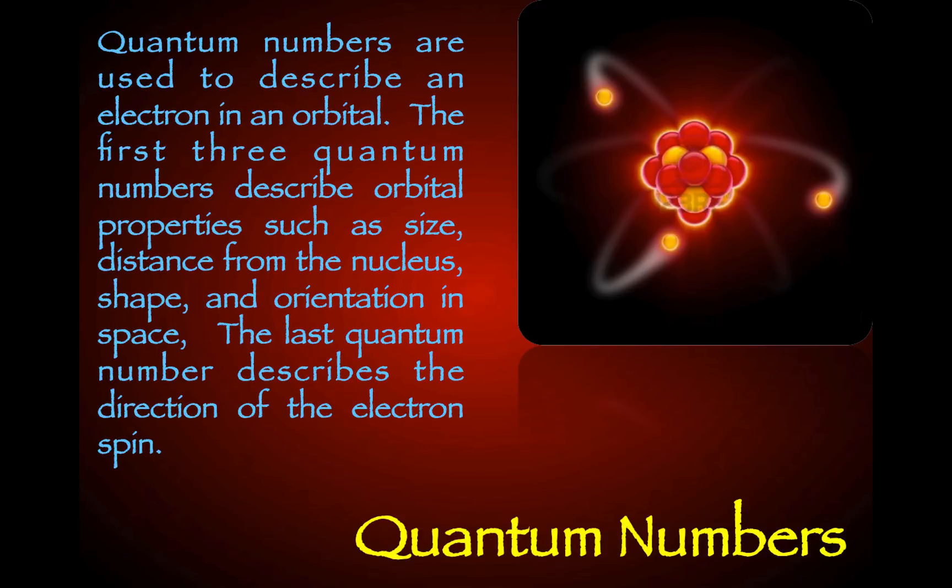Quantum numbers are used to describe an electron in an orbital. The first three quantum numbers describe orbital properties such as size, distance from the nucleus, shape, and orientation in space. The last quantum number describes the direction of the electron spin.